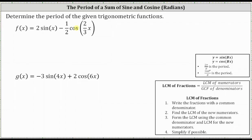We're asked to find the period of the given trigonometric functions. First we have f of x equals two sine x minus one half cosine two thirds x.